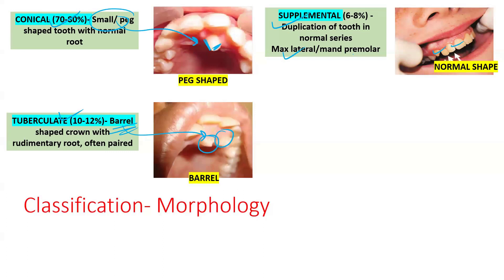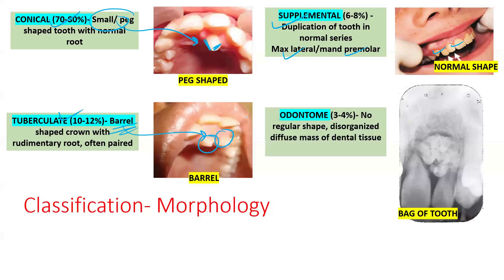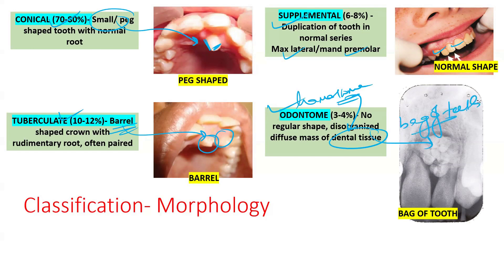The fourth morphological type is the odontoma, which is a hamartoma — a disorganized mass of dental tissue that looks like a bag of teeth on X-rays. To recap, based on morphology you have: conical, odontoma, tuberculate, and supplemental.